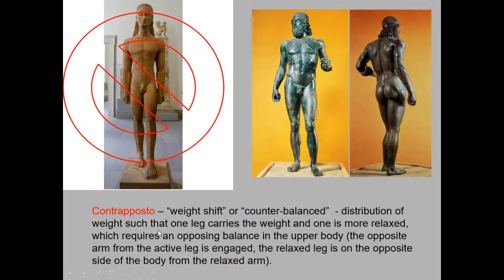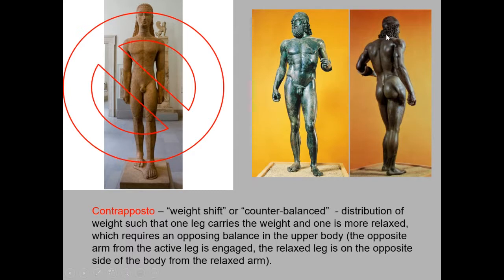The term contrapposto is one you definitely want to know. Contrapposto means weight shift. As the figure takes a step forward, the weight of the body is held on one leg, that hip is higher than the other, and there's a counterbalance to keep from falling. The arm on the weight-bearing side is loose; the engaged arm tilts the shoulders the opposite direction from the hips, creating an S-shaped curve in the spine — much more natural to the way human beings actually stand. It's really rare for anyone to stand with perfectly equal weight on both feet, completely straight across shoulders and hips.